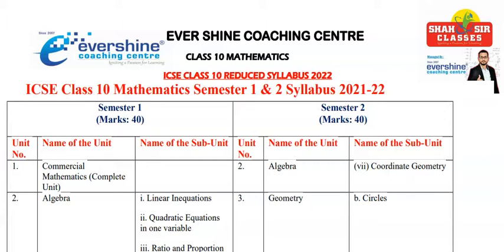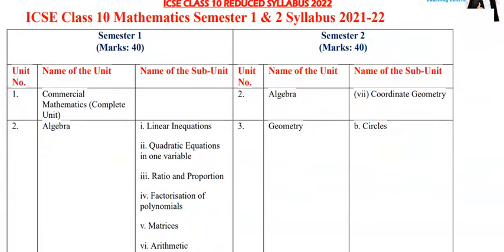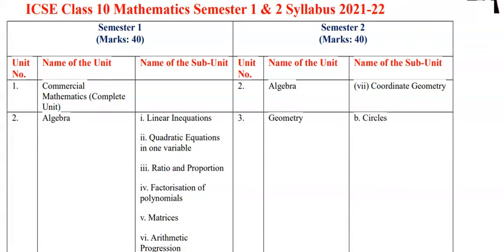As you all are aware, this year the examination pattern has got changed. It is under the semester scheme. Semester 1 carries 40 marks and semester 2 carries 40 marks. In this video, we are going to discuss about the mathematics syllabus for semester 1 and semester 2, with complete details about each semester, respective chapters, and the reduced syllabus.